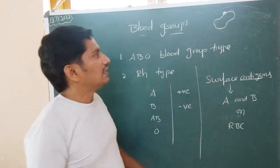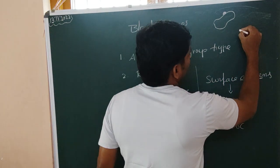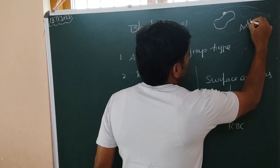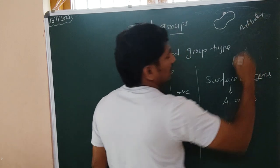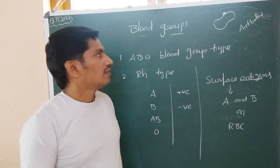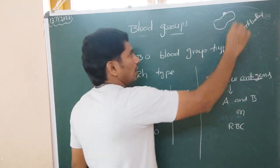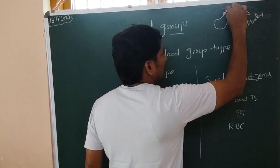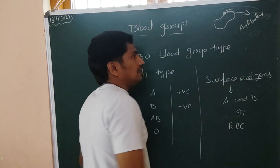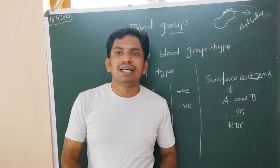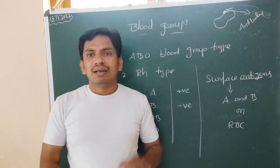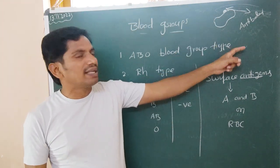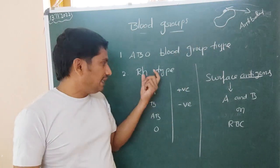Along with that, plasma also has antibodies. Antibodies are present in the plasma of the blood. Based on this, we can identify these blood groups.